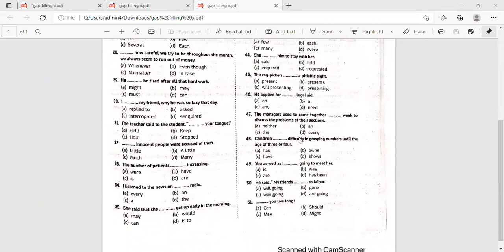Children dash difficulty in grasping numbers until the age of three. Children, we do say children. But we're going to use it as a singular or plural? Absolutely. Children have difficulty in grasping numbers until the age of three or four.